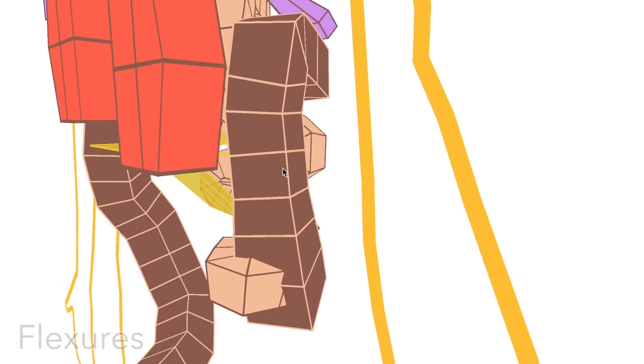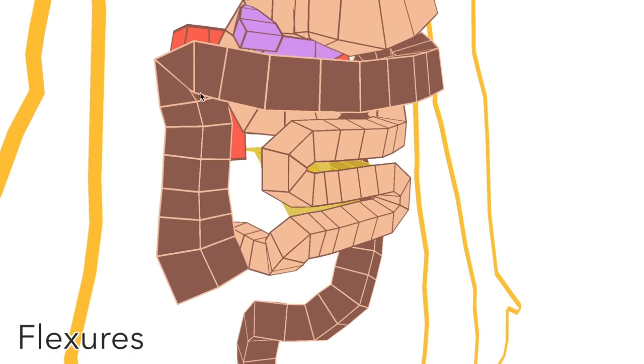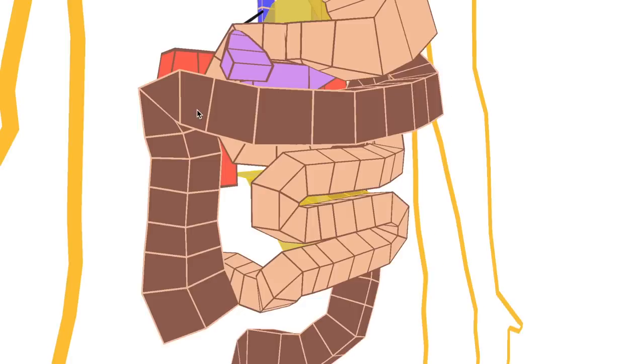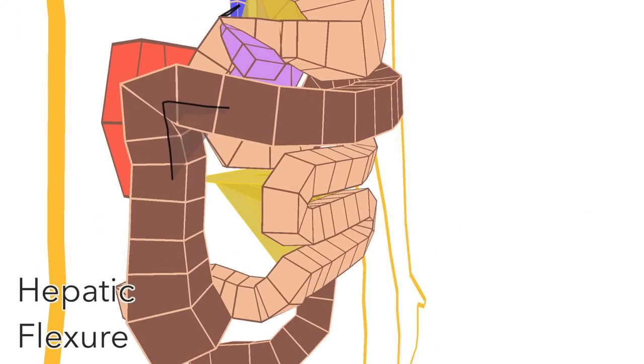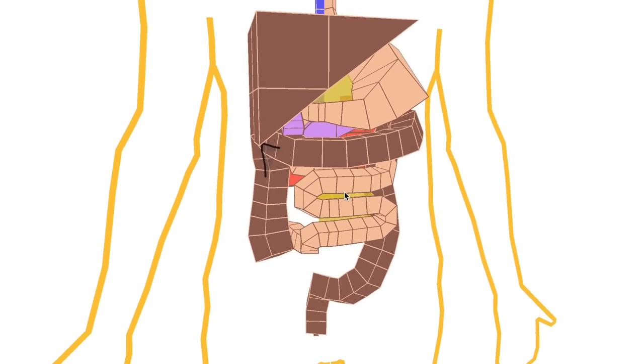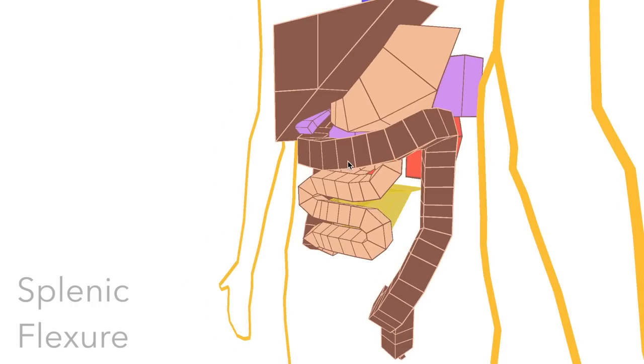The colon has two flexures, or 90 degree angles, here and here. So this is the hepatic flexure, as hepatic means of the liver, just beneath the liver there. And this is the splenic flexure, because of its proximity to the spleen.